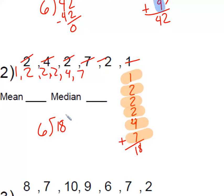So that's what I'm dividing by. 6 goes into 18. I know that's 3 times, because 6 times 3 is 18. So my mean here, or my average, is 3.